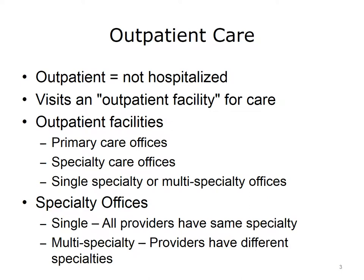This lecture will discuss the types of outpatient healthcare facilities and the role of primary care, including its definitions, goals, and the parties involved. The term outpatient refers to the delivery of healthcare services in a setting where the patient is not hospitalized. Outpatient facilities include physician's offices, which may provide primary or specialty care, and may be single-specialty offices. In a single-specialty group practice, all providers are in the same specialty, for example, internal medicine.